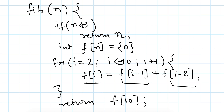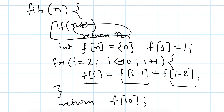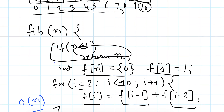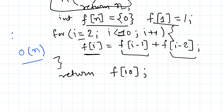We initialize F(0) as 0 and F(1) as 1, and start the loop from F(2). For F(2) we use F(0) and F(1) which we already have. For F(3) we need F(1) and F(2), which we also already have. So this will be linear. We have reduced the time complexity from exponential to linear for Fibonacci numbers.